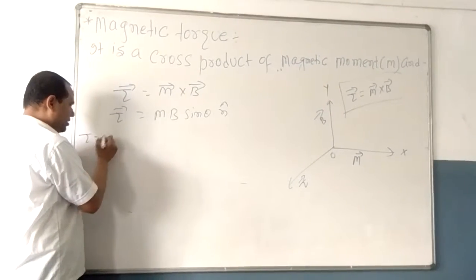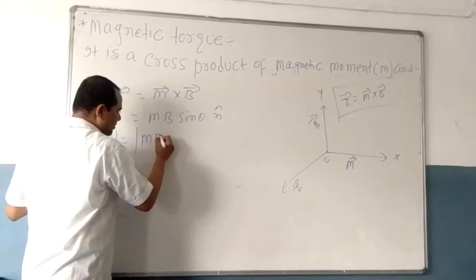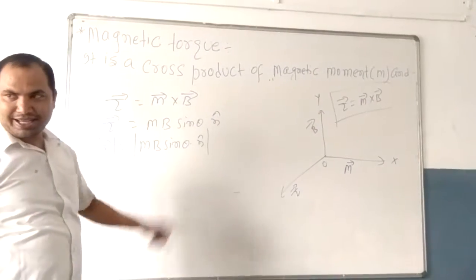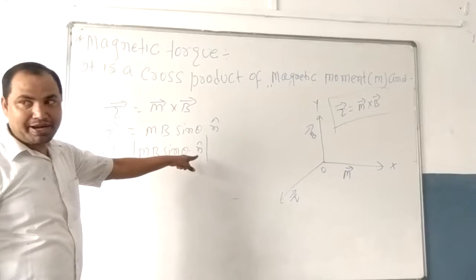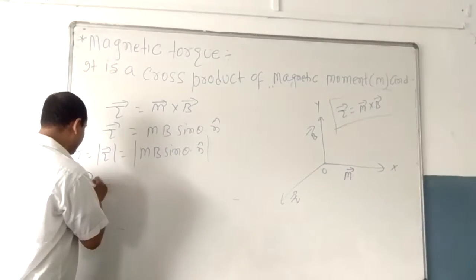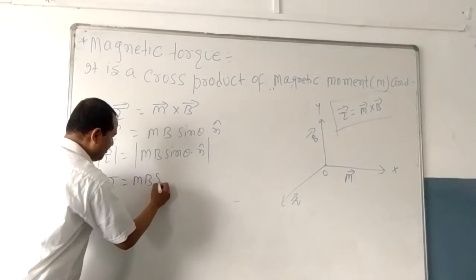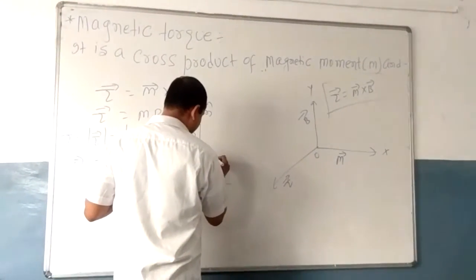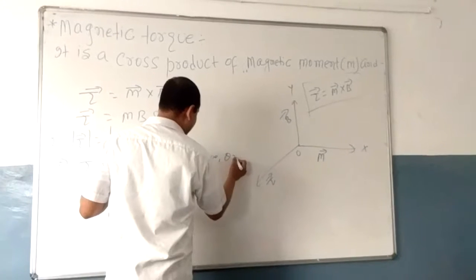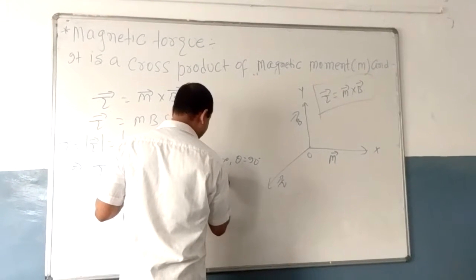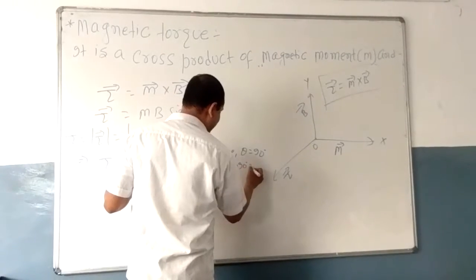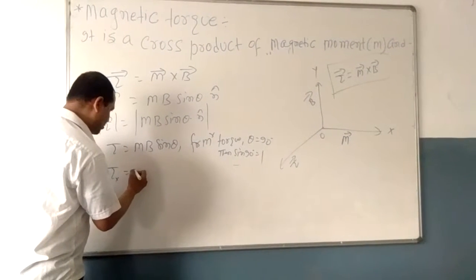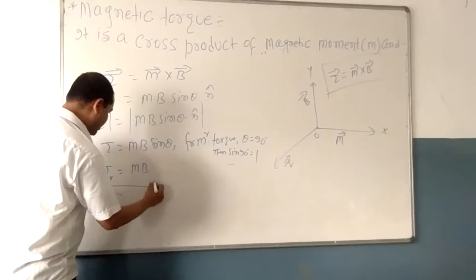The magnitude of torque is equal to M·B·sinθ. I know that M·B·sinθ is already a scalar quantity, and n̂ is a unit vector of magnitude 1. So torque equals M·B·sinθ. For maximum torque, θ equals 90 degrees, and maximum torque is equal to M·B, since sin 90° = 1.